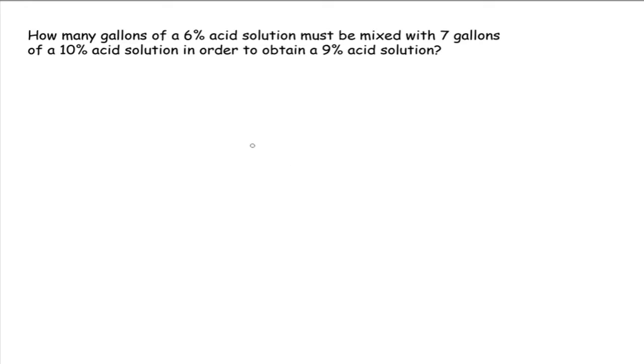So the best way to start application problems is to always define your variable. So I'm going to go over to the side and say, let's let X be what? Well, what are we looking for? We're looking for the number of gallons of 6% acid solution. So let X be gallons of 6% solution.